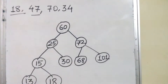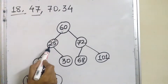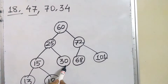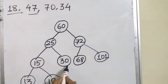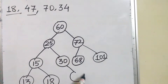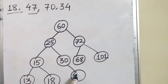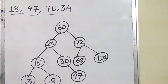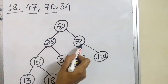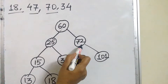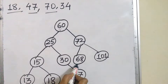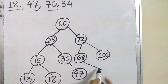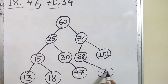Next value is 47. From the root, come to the left. From 25, come to the right. Again, 47 is greater than 30, so it is inserted at the right side of 30. Next value is 70. Come to the right side of root. 70 is less than 72, so come to the left. From 68, it is greater, so come to the right of 68.